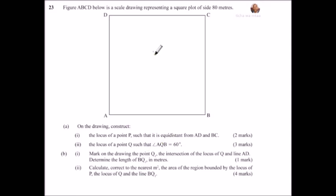Roman number 2, calculate correct to the nearest meter square, the area of the region bounded by the locus P, the locus of Q, and the line BQ. Because we may not be able to draw this on the computer here, I am going to guide you on how to go about it.